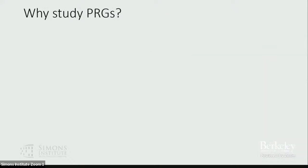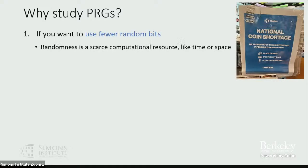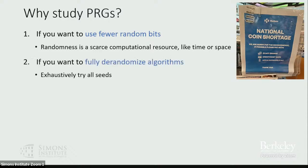I should say something about what's the point of all this. The most basic reason to design pseudorandom generators is because we want to think of random bits as a computational resource, kind of like time or space. Just like a faster algorithm is better than a slower algorithm, an algorithm that uses less randomness is better than one that uses more randomness. Best of all is a completely deterministic algorithm — one that uses zero random bits.